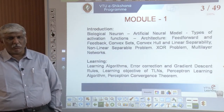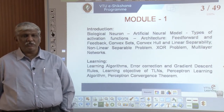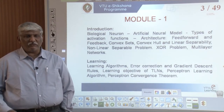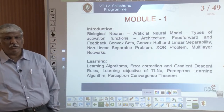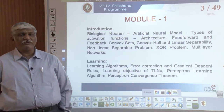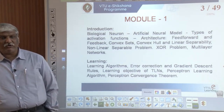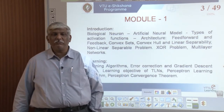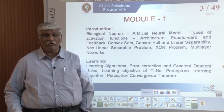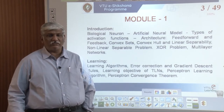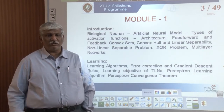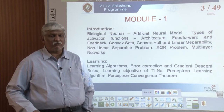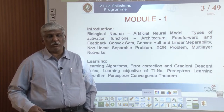The syllabus in Module 1 consists of the study of the biological neuron — its architecture and function — and how to mimic it into an artificial neural network. It also covers activation functions, the basic architecture of feed-forward and feedback networks, convex sets, convex hull, linear separability, and how to use neural networks for separating things. For a non-linear separable problem like an XOR problem, we study how to use a multi-layer network.